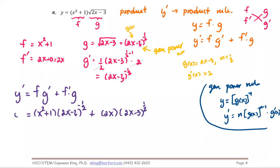Now we clean up. When you see a negative exponent, it's easier to rewrite it as a positive power in reciprocal form. You cannot distribute x squared plus one into the parentheses because both terms are protected by the power negative one half, so rewrite the first term with the negative power as a fraction in positive power form.